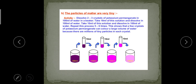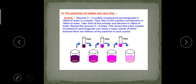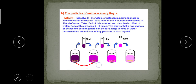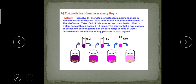From that second beaker you take another 10 ml and add it to another beaker also containing 100 ml of water. You repeat this process again, taking 10 ml and adding it to another beaker with 100 ml of water. In all these cases you can observe the color of the solution, but the intensity of the color varies. Since color is visible in each case, potassium permanganate particles are present in each.